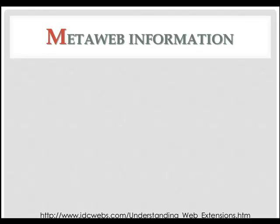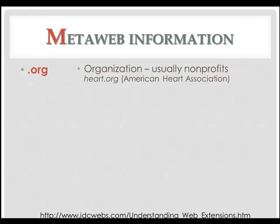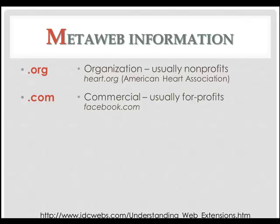When looking at the metaweb information, one of the most helpful things is to look at the extension at the end of the address — the .com, the .org — and try to figure out what that tells you. If my extension ends in .org, such as the American Heart Association at heart.org or cancer.org, which is the American Cancer Society, that tells me it's an organization, usually a non-profit. .coms are commercial, usually for-profit — Facebook, Google.com, a lot of commercial sites.